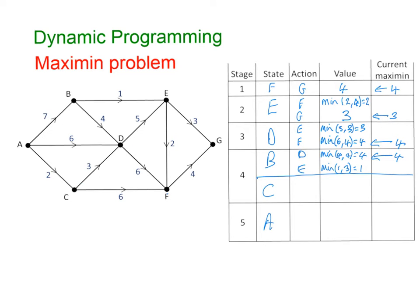From C, I have two paths: to D and to F. C to D has a weight of 3; from D the current maximum is 4, so the minimum is 3. C to F has a weight of 6; from F the current maximum is 4, so the minimum of 6 and 4 is 4. My best case scenario from C is 4, via F.